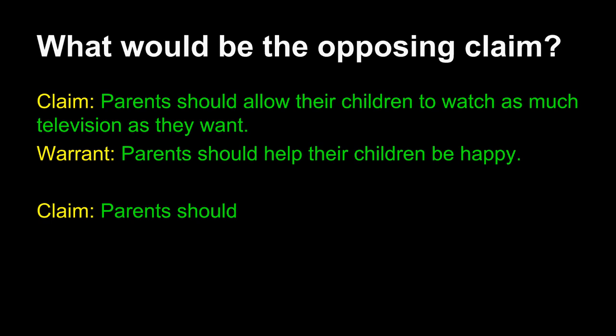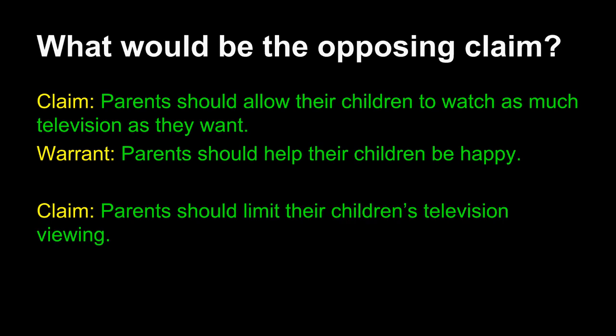How do I complete the claim sentence? My original claim said that parents should allow their children to watch as much television as they want. The action was "allow their children to watch as much television as they want." My claim for the opposing position would be an action that directly contradicts it. So if you wish to write the same responsible agent, use the word "should," and then outline an action contrary to the original. Instead of allowing them to watch as much as they want, I will limit their television viewing.